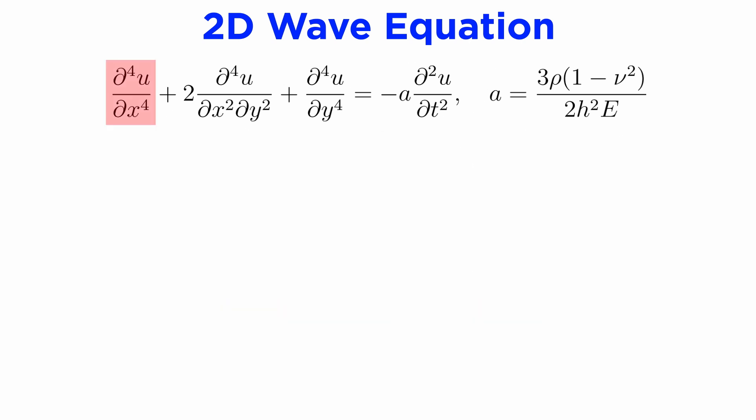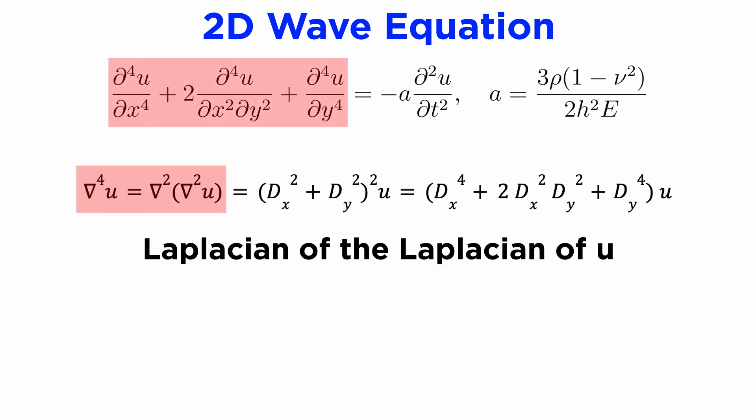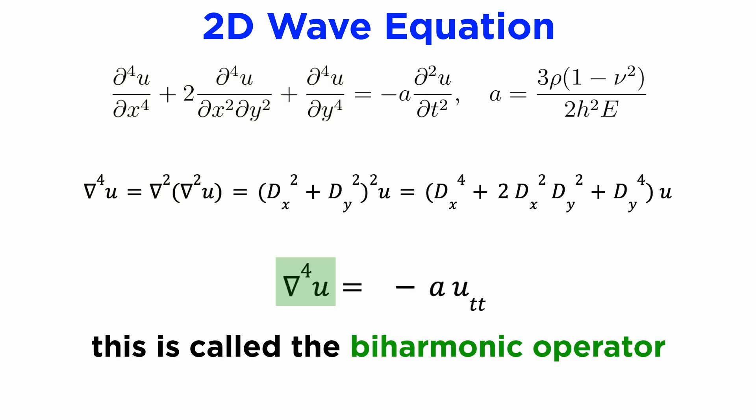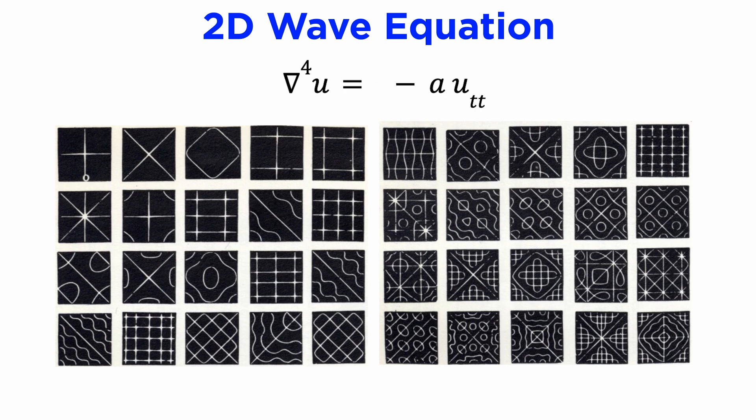This is a fourth-order PDE, and we can verify that the left side is actually the Laplacian of the Laplacian of u. This Laplacian squared operator is often referred to as the biharmonic operator. Just like the 2D wave equation, the free vibrations of a membrane occur with different modes and nodal lines.